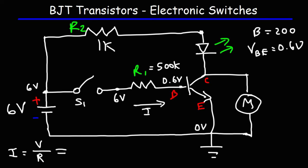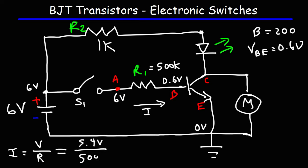The voltage across R1 is the electric potential difference between those two points — we can call this point A and the other point B. So the voltage is going to be 6 minus 0.6, giving us 5.4 volts across R1. And R1 is 500 kilo-ohms. When you divide volts by kilo-ohms, you get the current in milliamps. So 5.4 divided by 500 gives us a base current of 0.0108 milliamps.